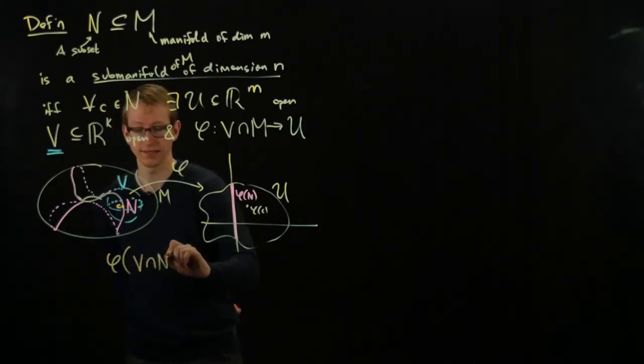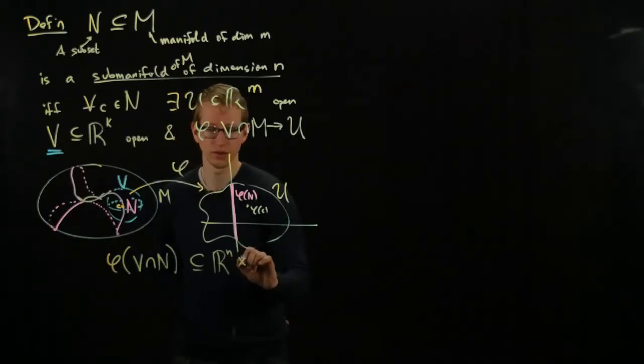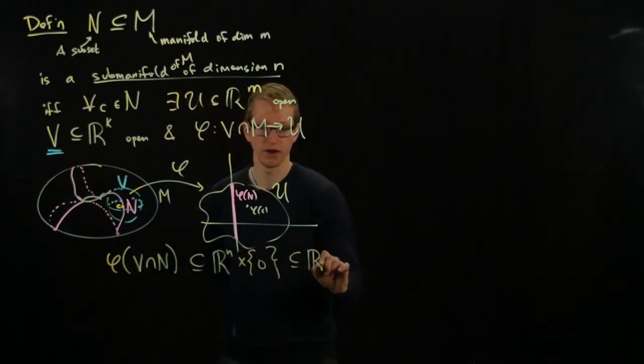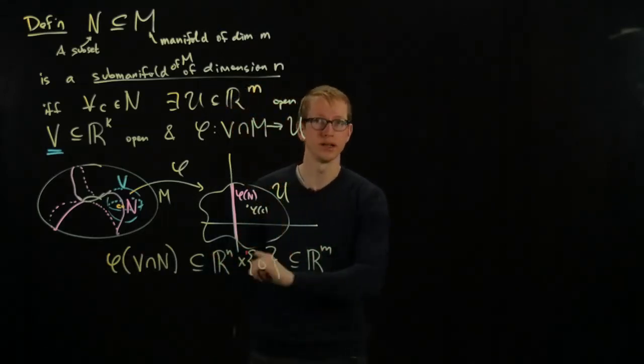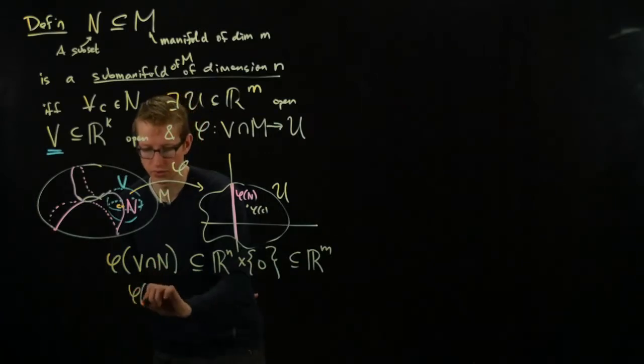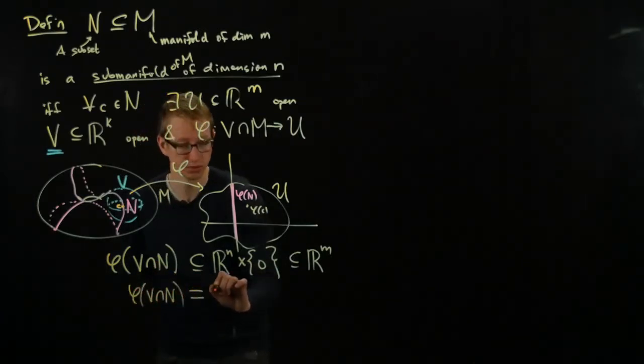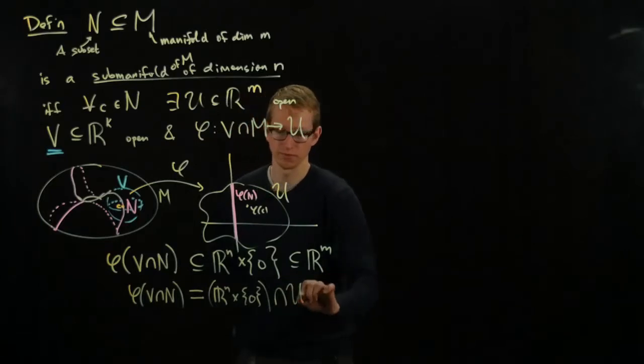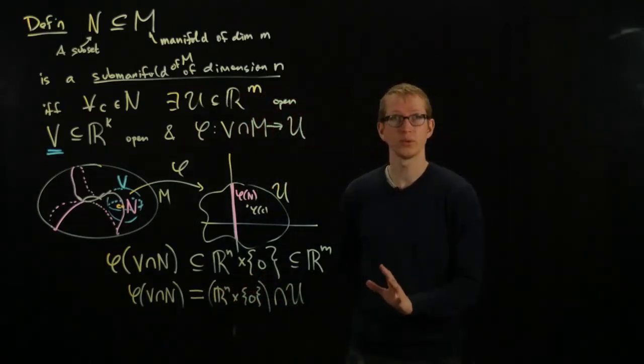So more precisely, phi V intersect N lies along some N-dimensional plane inside of Rm. And actually, not only that, but it's contained in U as well. You could maybe say it this way to write that U containment a little bit more clearly. It equals Rn cross 0 intersect U. So this is what a sub-manifold is.